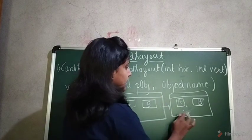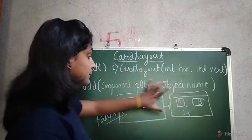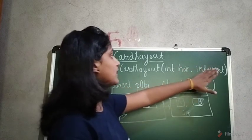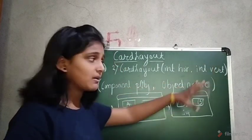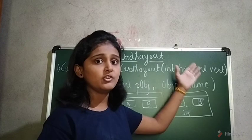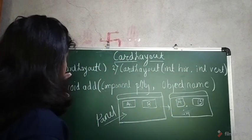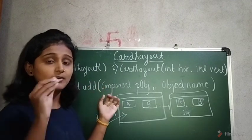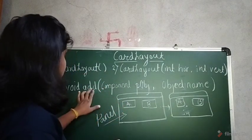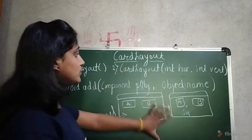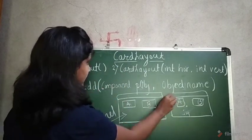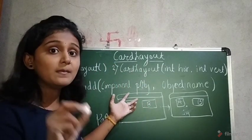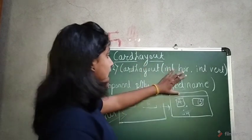If you click on B, it will show different information or a different output, but the buttons remain the same. CardLayout has two constructors: the first is a default one, and the second takes horizontal and vertical parameters for spacing between components. The add() method is used — and remember, this method belongs to the Container class.